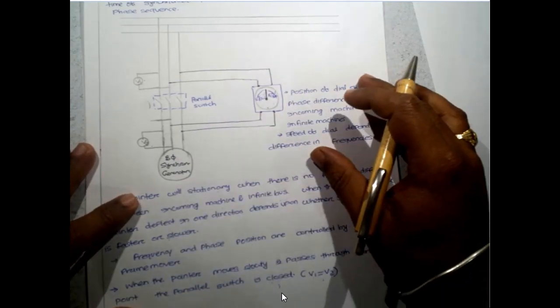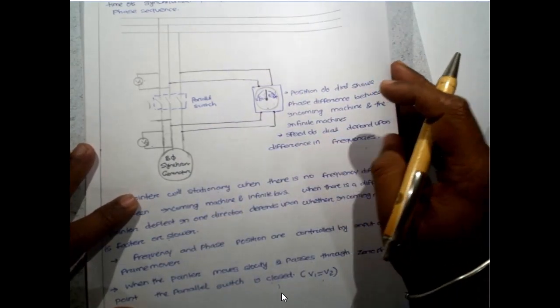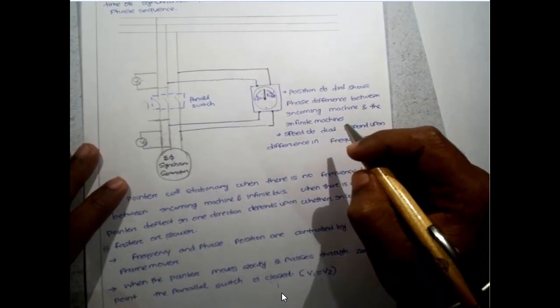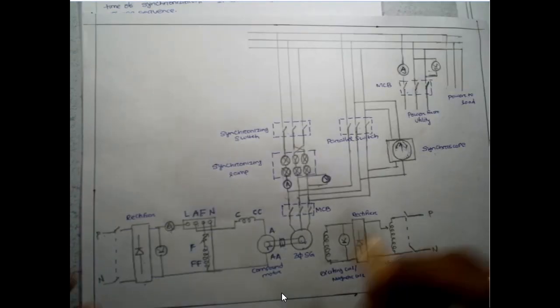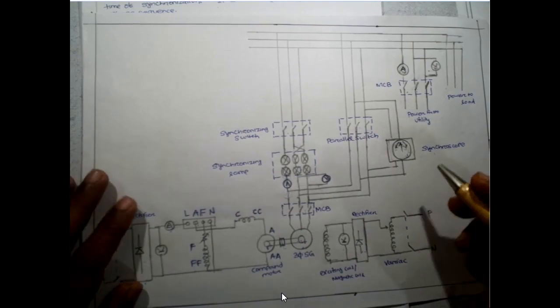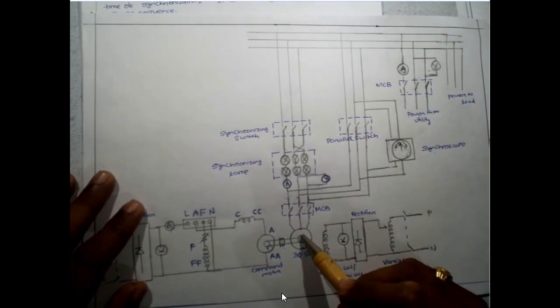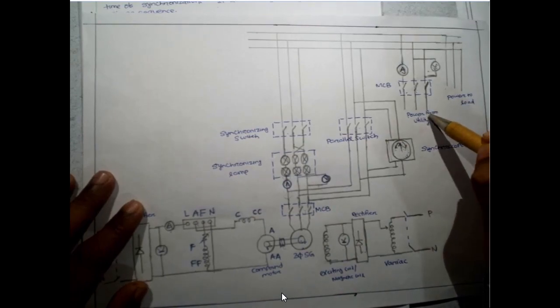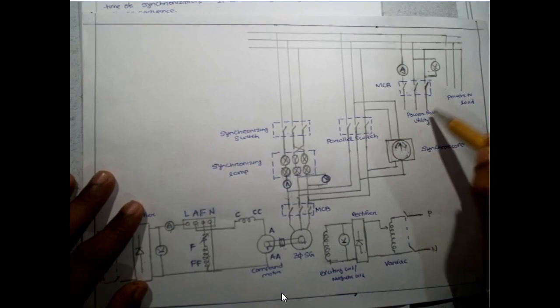This is all about the synchroscope. Note that the synchroscope only helps with frequency and phase but does not give information about phase sequence. This is the complete diagram of the practical we are going to do today. We are going to connect this alternator with the power from the utility — we are getting it from the utility.